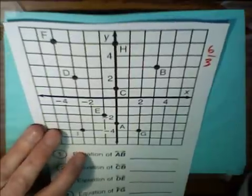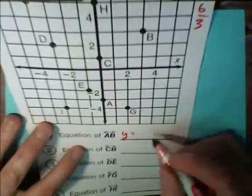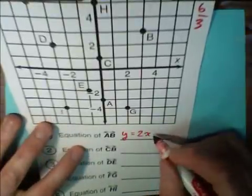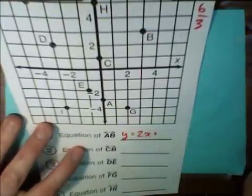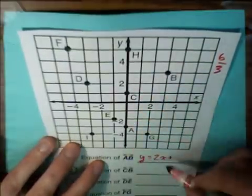That's our slope. So our equation is going to start y equals 2x plus something. So again, we've got this point. We can use increments of the slope.